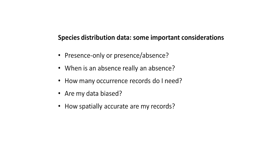Some important considerations: presence-only versus presence-absence data — that's a classic we've mentioned. The question of when is an absence really an absence is a really key question, not just for building the models but also for testing the performance of the models. How many records do I need is a classic question we get asked — how many records do I need to build the model? There's no easy answer to that. Are my data biased? And how spatially accurate are my records?